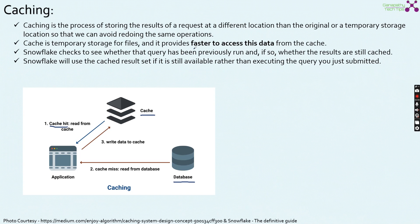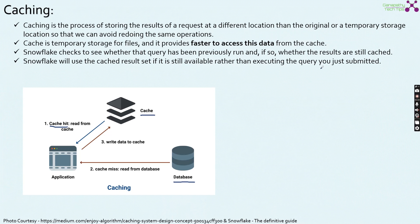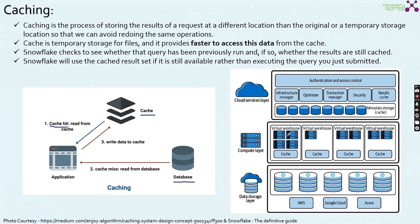Cache is a temporary storage for files — it provides faster access to data. Snowflake checks whether a query has previously run and if so, whether the results are still cached. Snowflake will use the cached result set if it is still available rather than re-executing the query. The same concept of caching applies within Snowflake.